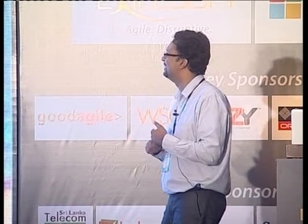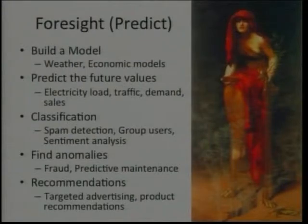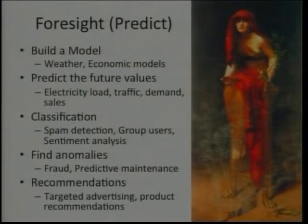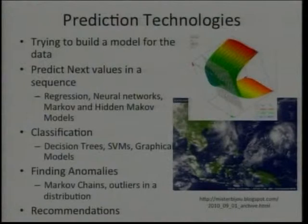The last and most famous case is foresight — how do you predict? There are a few classes: one is predicting future values, one is classification (which group does something belong to), one is finding anomalous behavior, and the last is making recommendations — if he bought that book, what other books might he like? Things that Amazon does, for example.